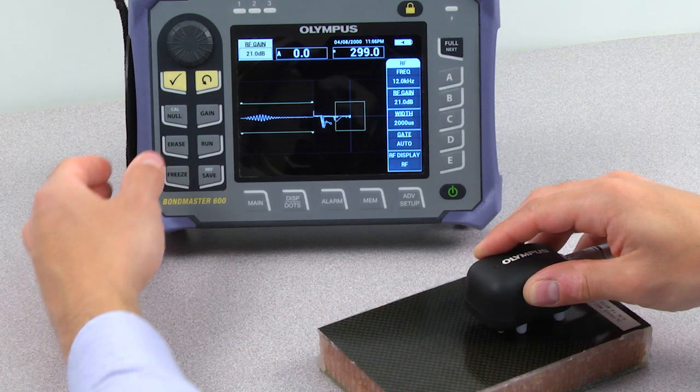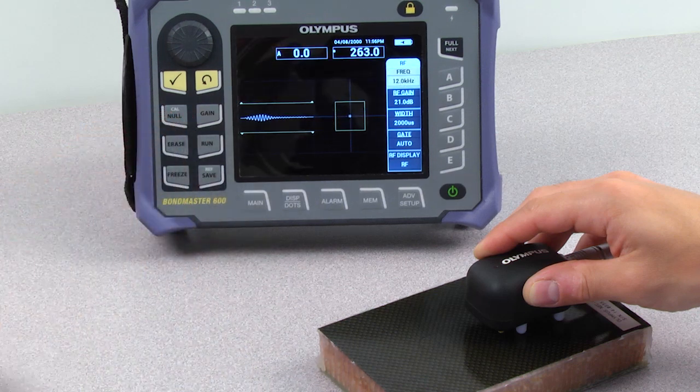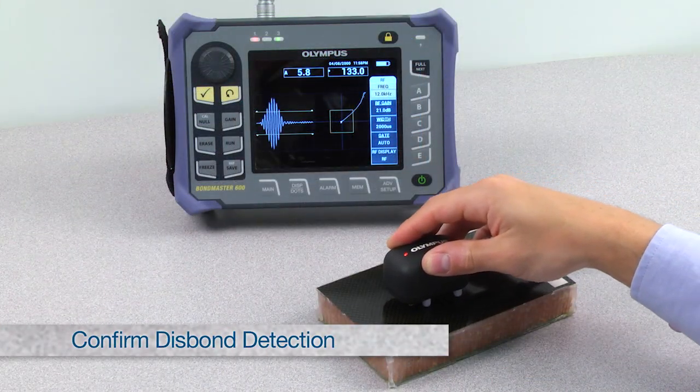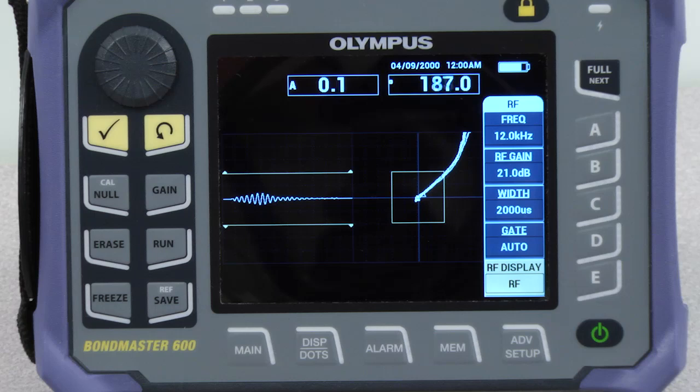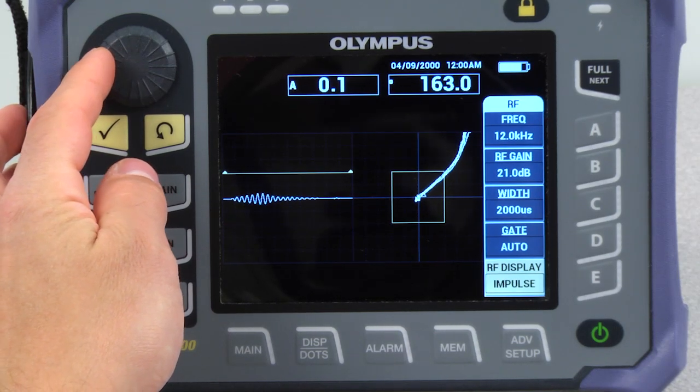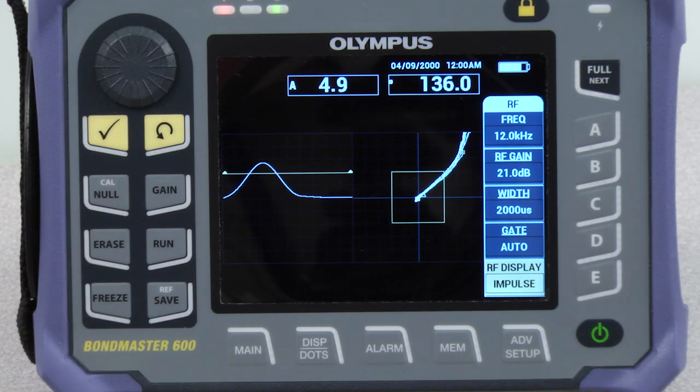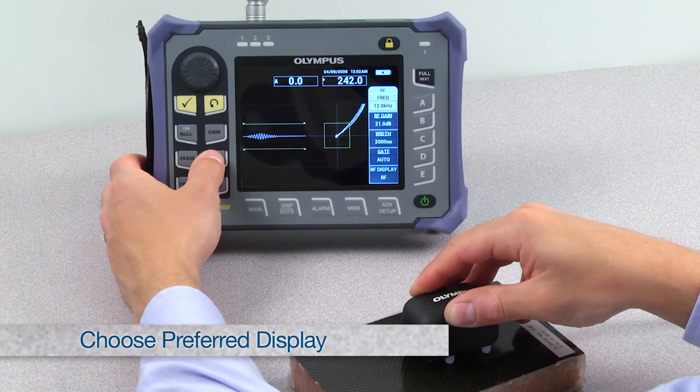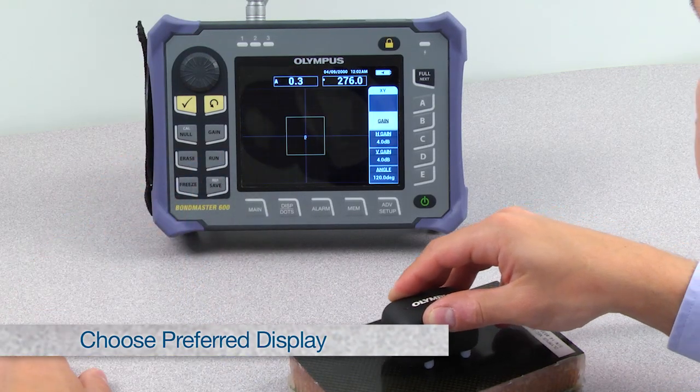Keep the probe on the same area and press the null key. Slowly scan over the disbond in order to confirm detection. Set the RF display to impulse if you prefer to visualize the signals this way. Press the run key until your preferred display is shown.